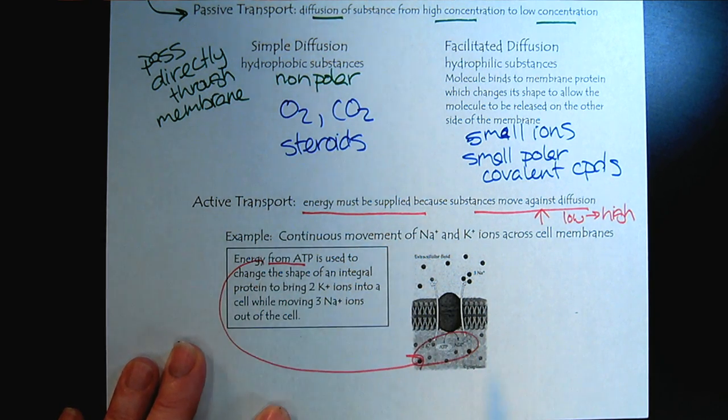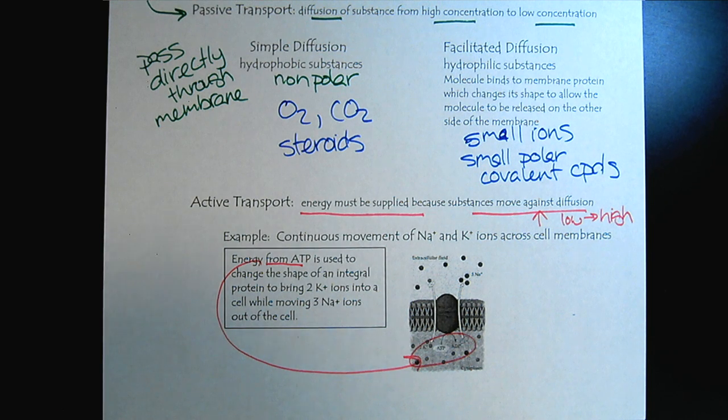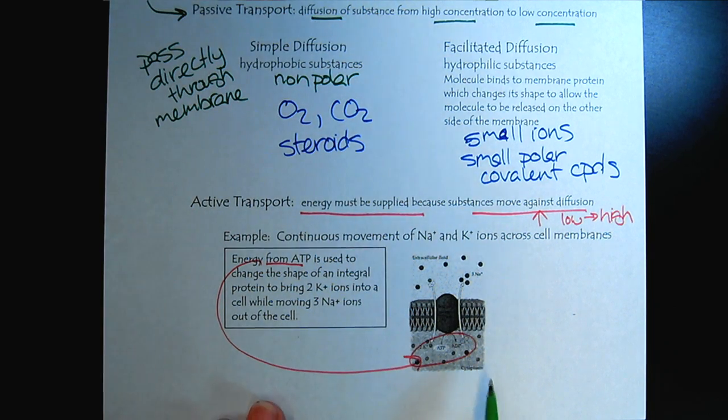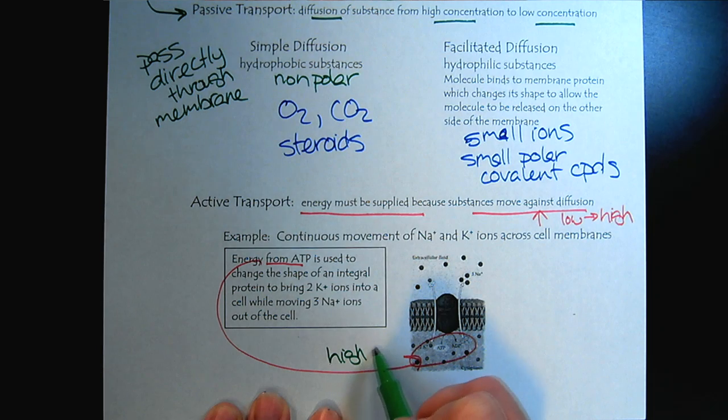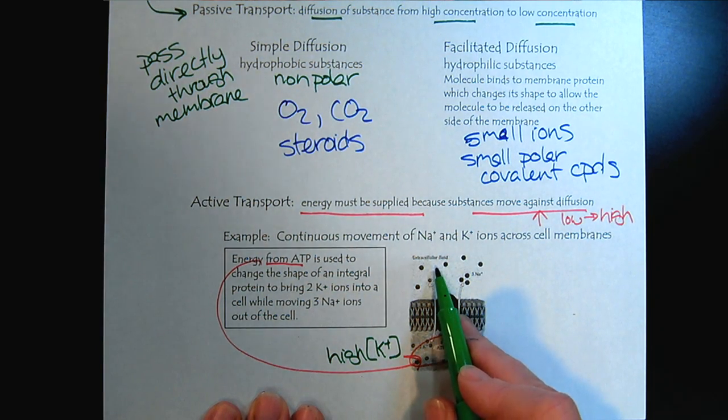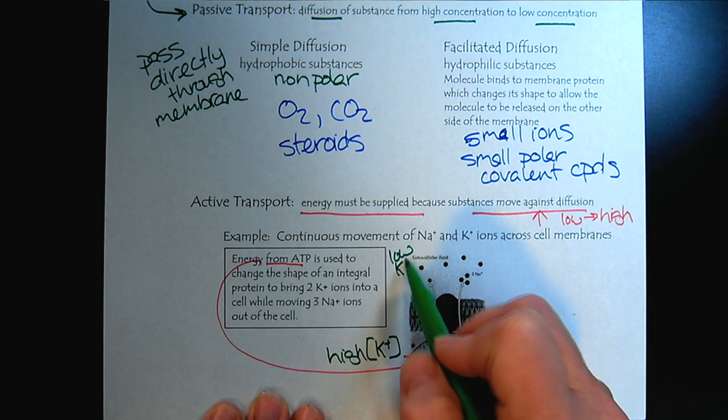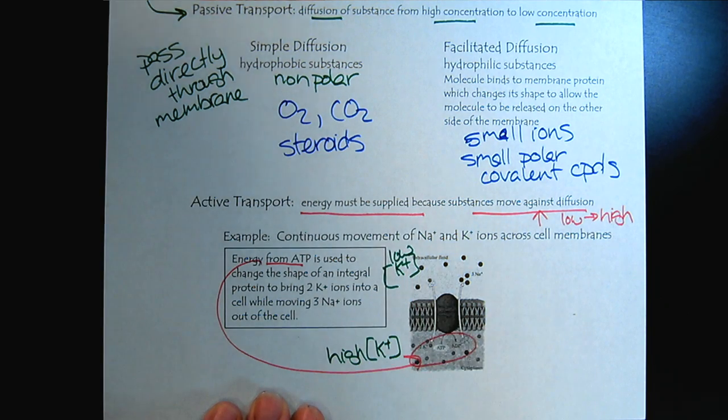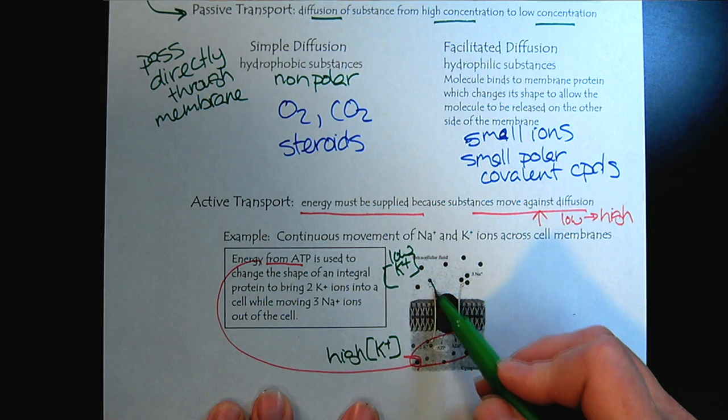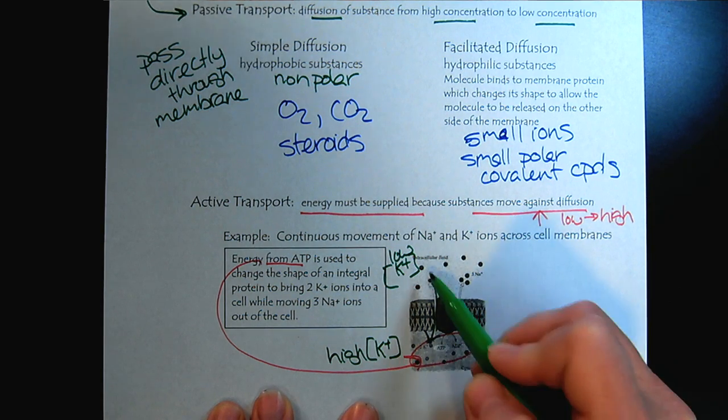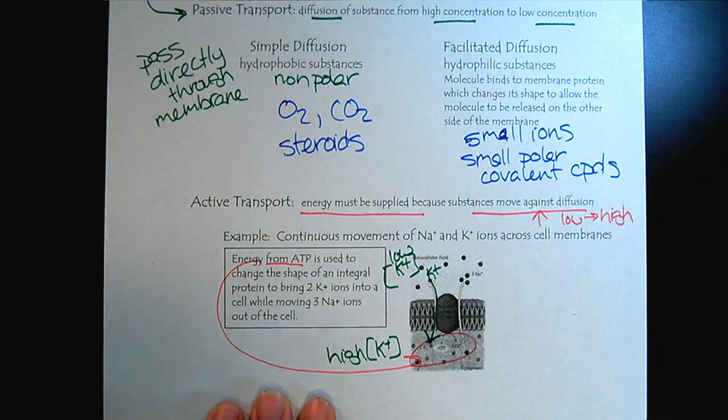And very common is the movement of the sodium and potassium ions across the membrane. So inside the cell we have a high potassium ion concentration, and outside the cell we have a low potassium concentration. However, if we look at the arrows here, we see we're moving potassium into the cell. The potassium ions are trying to move in. So that requires ATP energy.